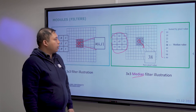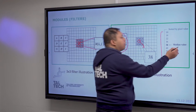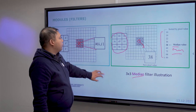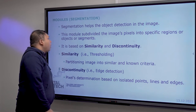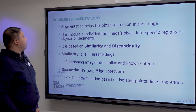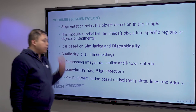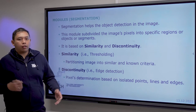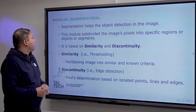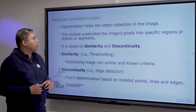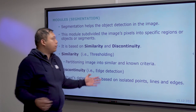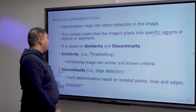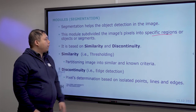That was just an example — whether it is a median, mean, or Gaussian filter, each has its own calculation method. The second module is segmentation, which is one of the most important modules. It divides the image pixels into specific regions to identify your objects, based either on similarity or discontinuity of pixels.